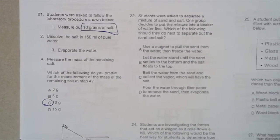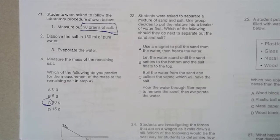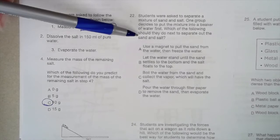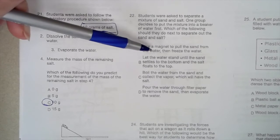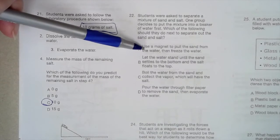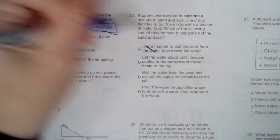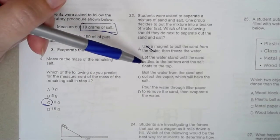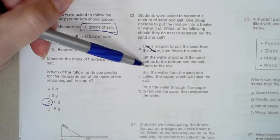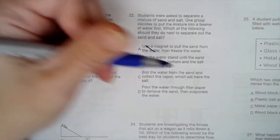Students were asked to separate a mixture of sand and salt. One group decides to put the mixture into a beaker of water first. Which of the following should they do next to separate out the sand and salt? Use a magnet to pull the sand from the water? Is a magnet going to help? No. Let the water stand until the sand settles to the bottom and the salt floats to the top. Is that going to work? Does salt float to the top? No, it dissolves. That's not going to work.